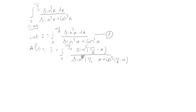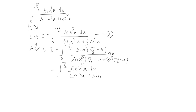Now, you know very well that sin(π/2 minus x) is cos x. So this automatically becomes integral from 0 to π/2 of cos⁵x dx divided by (cos⁵x + sin⁵x). This is equation 2.